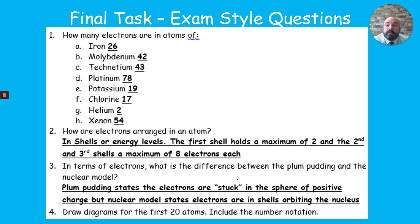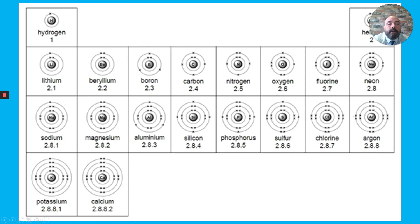For question one, using the atomic number at the bottom: iron has an atomic number of 26, so it has 26 protons (positive charges) and therefore 26 electrons (negative charges). For question two — how are electrons arranged in an atom? They're arranged in shells or energy levels, with the first shell holding a maximum of two and the second and third shells holding a maximum of eight electrons. The difference between the plum pudding and nuclear model regarding electrons: the plum pudding model has electrons stuck in a sphere of positive charge, while the nuclear model states electrons are in shells orbiting the nucleus.